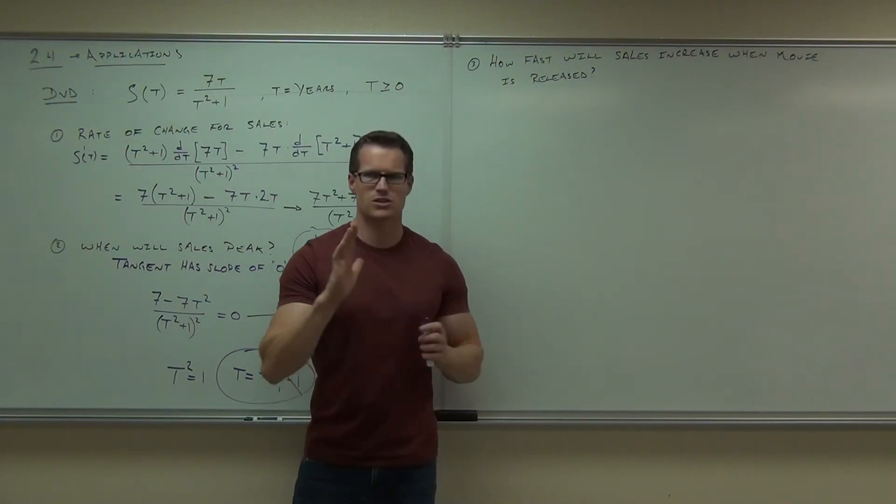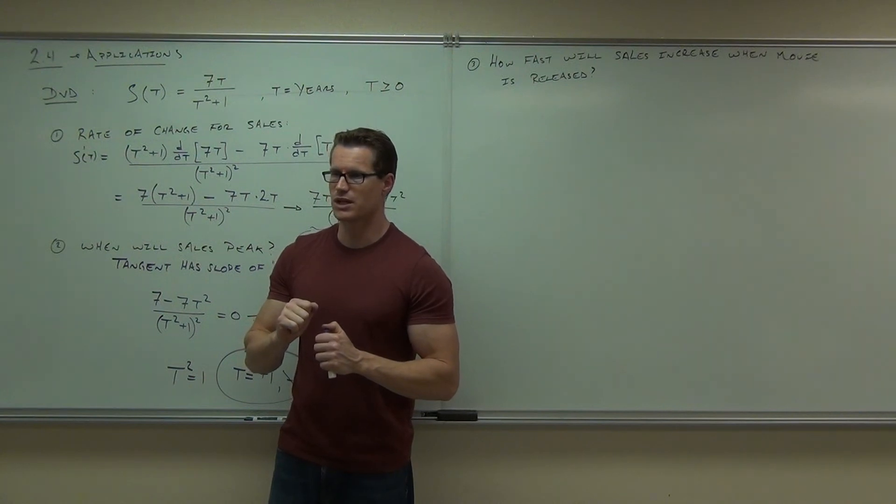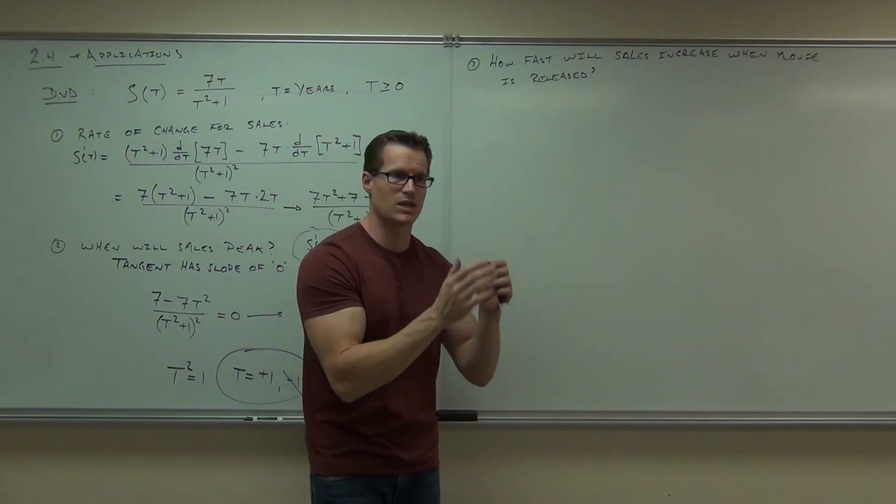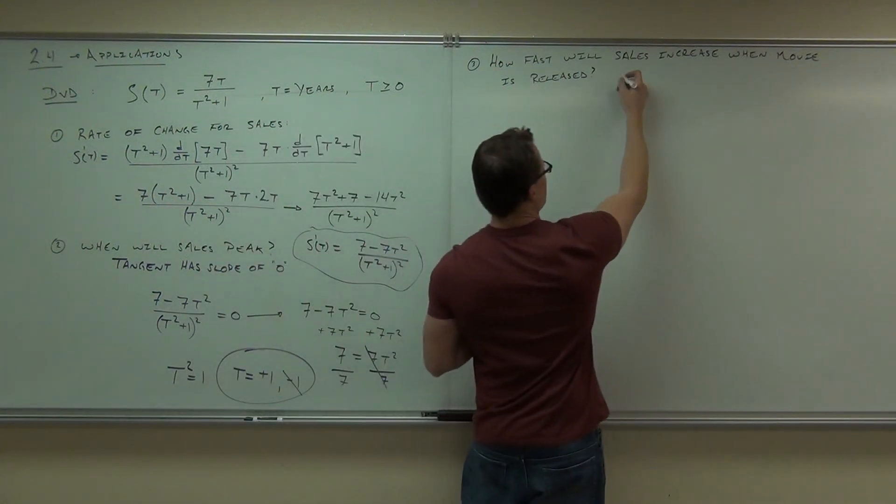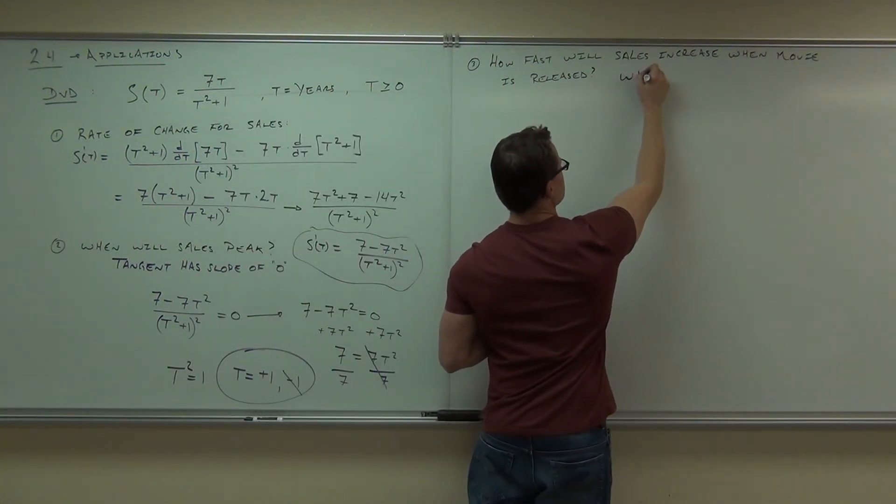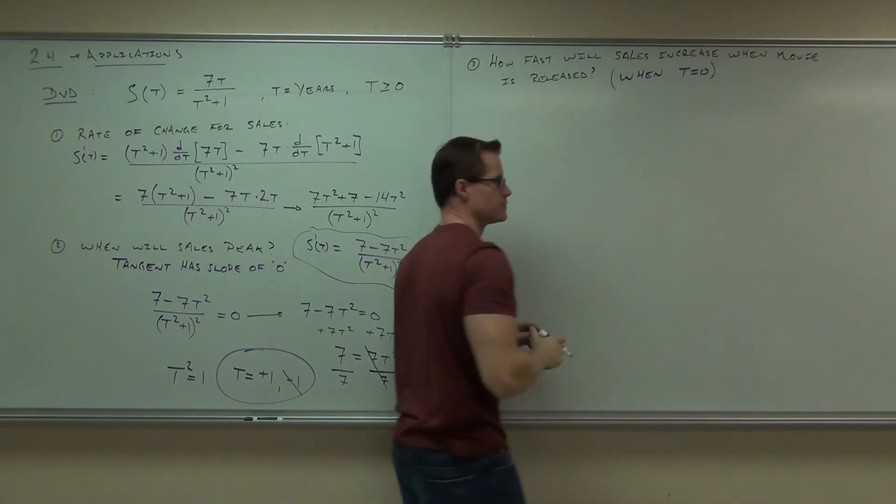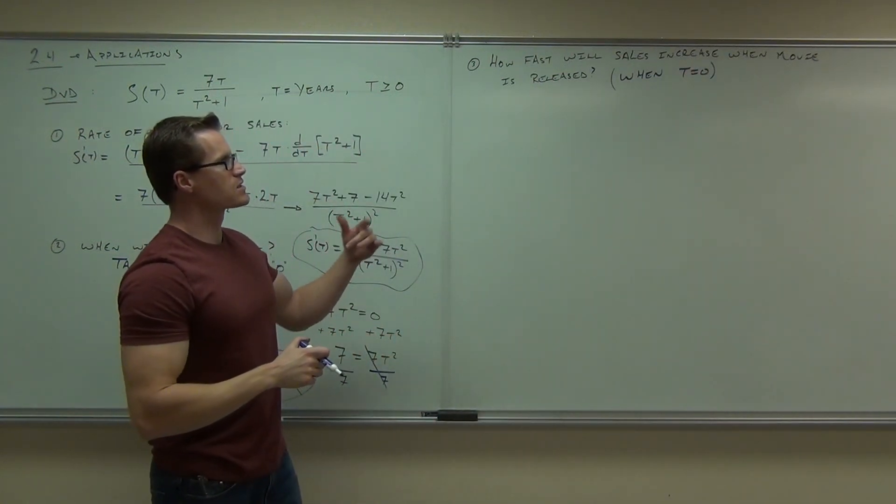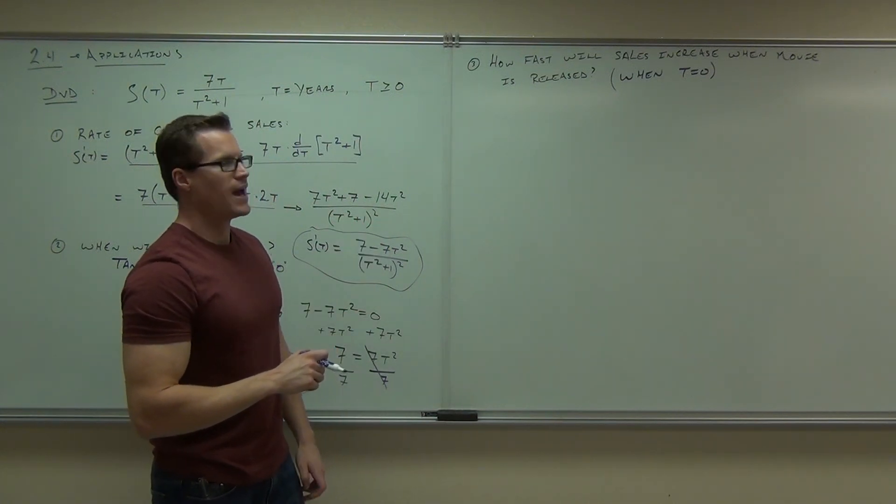That's an interesting question. Even though we haven't sold any yet, we want to find out how fast we're going to be increasing our sales. That's weird because we can do that at t equals 0 with our derivative. So this happens when t equals 0. How fast will sales increase when the movie is released?